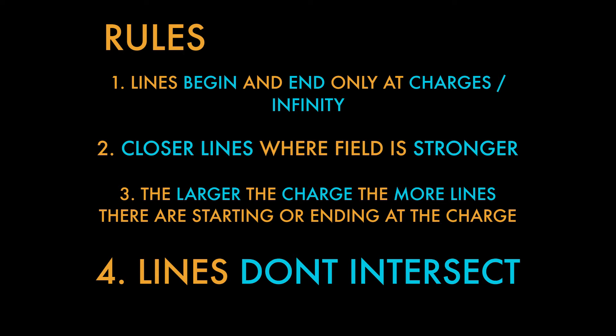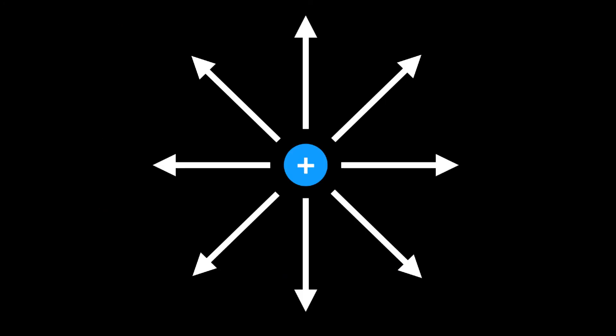So our first example we have a positive source charge. And like I was saying before, all the electric field lines are flowing from the positive source charge to infinity. Now imagine if we wanted to find the electric field vector, say, at that point right there in the green.